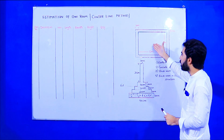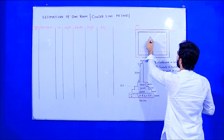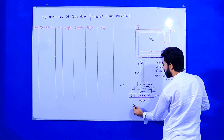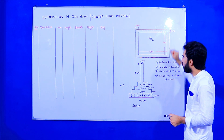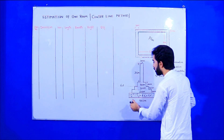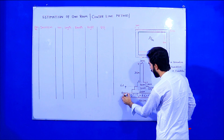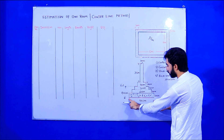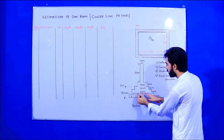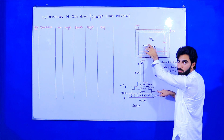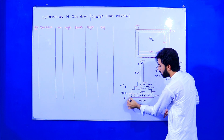This is the plan of one room which size is 5 by 4 meters. This is the plan and this is the section for this room. The length of the room is 5 meters and its width is 4 meters. From foundation to ground level the width of the foundation is 90 centimeters. The first step has a depth of 30 centimeters, the second step also 30 centimeters depth, and the third step has a width of 50 centimeters and depth of 30 centimeters.